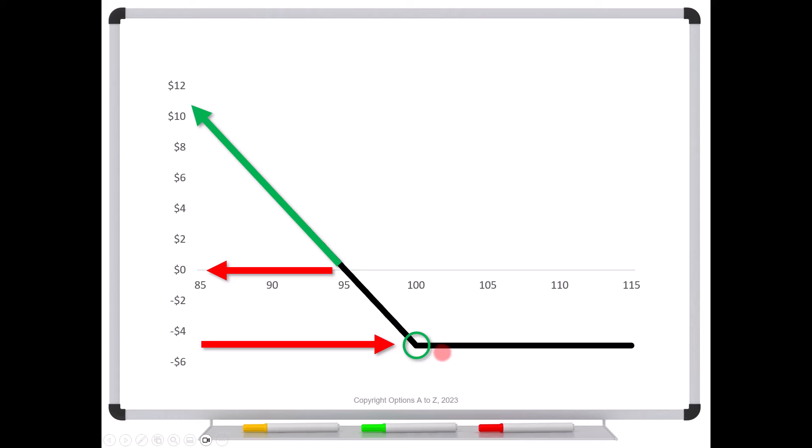And that's why the line flattens right here. That's the entire reason for paying an extrinsic value in any long option. It's an insurance policy. And just as before, once I have a put option, don't think that it's a put.